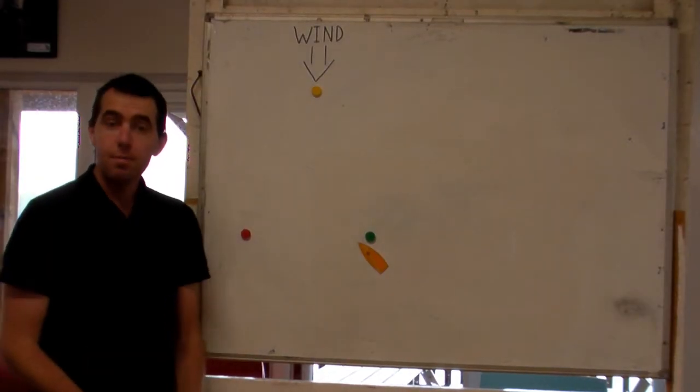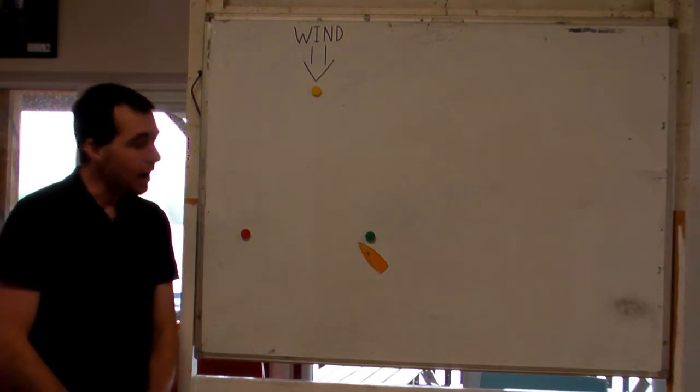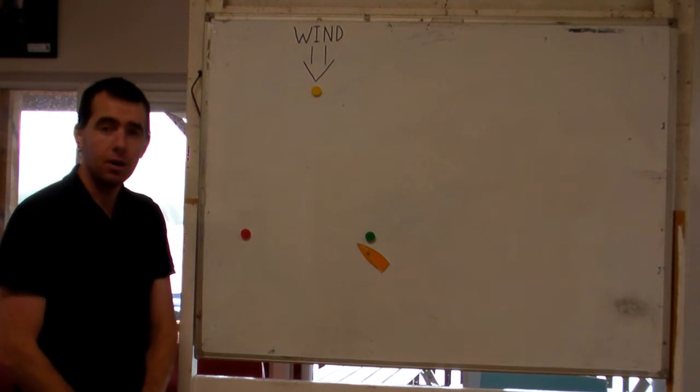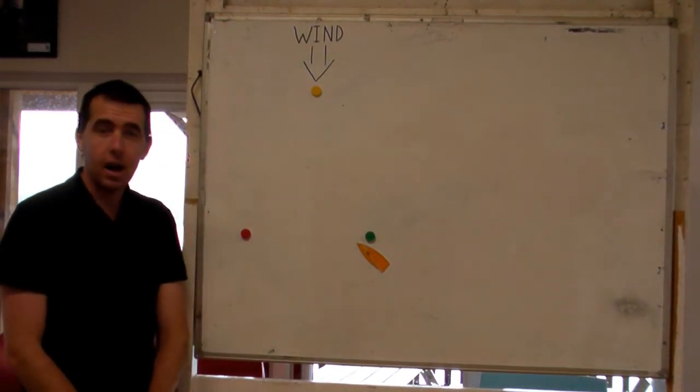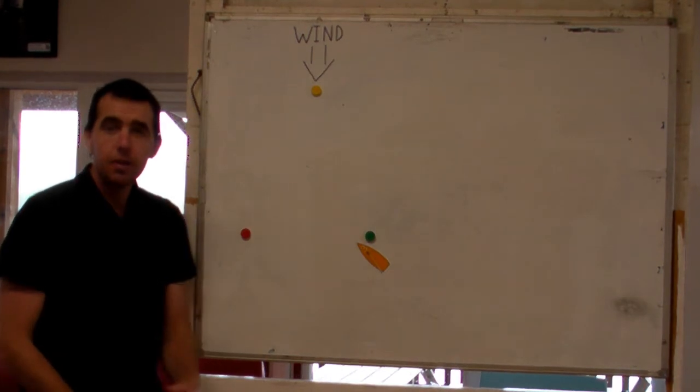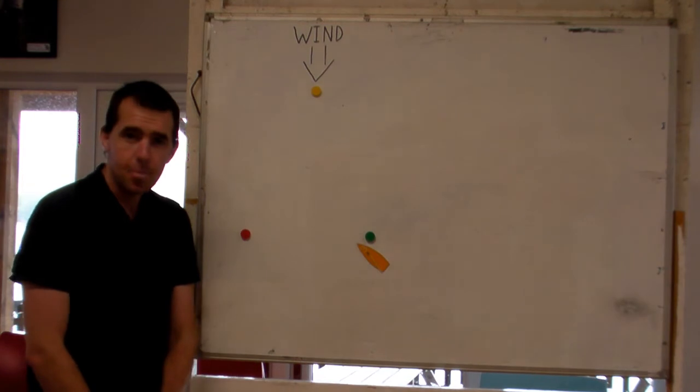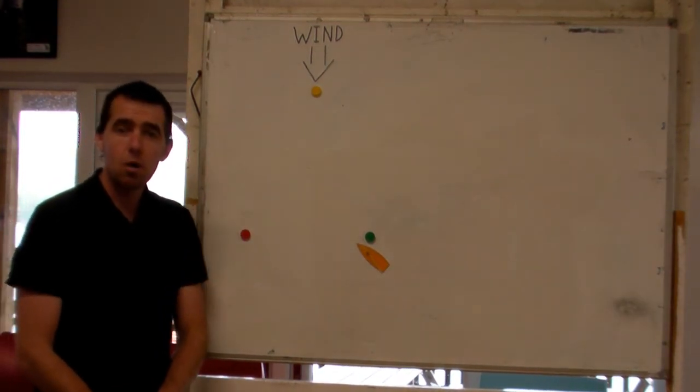We've got all our information about how to start our race. We know where we want to start on the line, and in this case, we're going to start on the starboard tack at the starboard end of the line. What we can look at now is the actual start sequence, and how we're going to start our race. There's a few different countdowns which are used at various races around the country. The one we're going to look at at the moment is five minutes, four minutes, one minute, go.